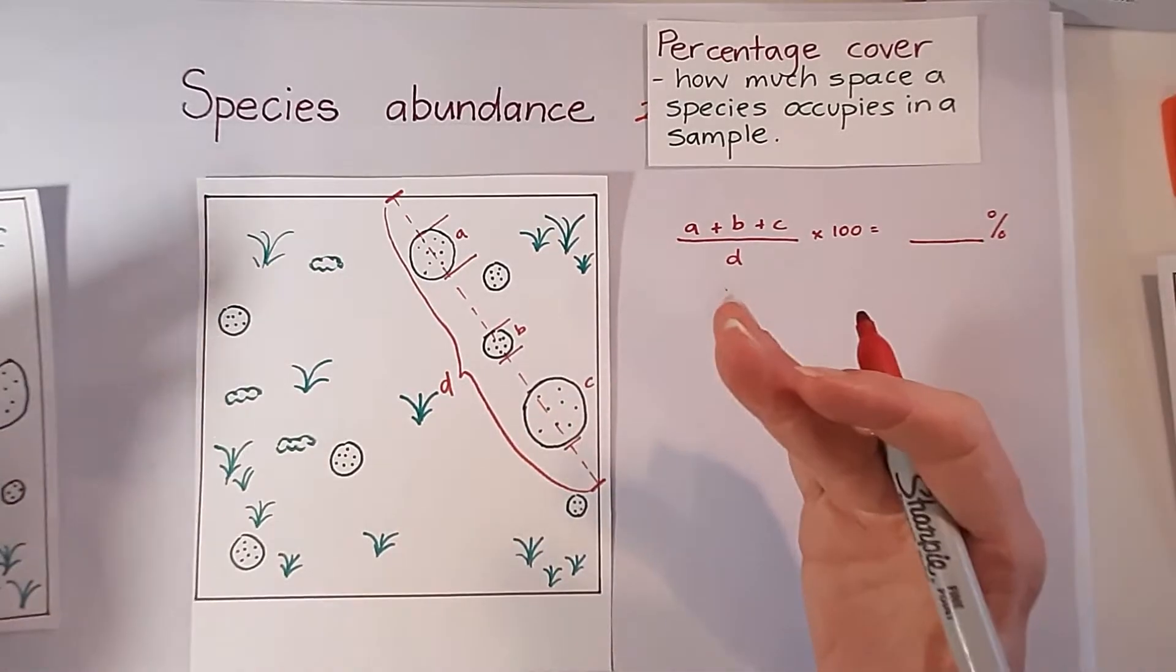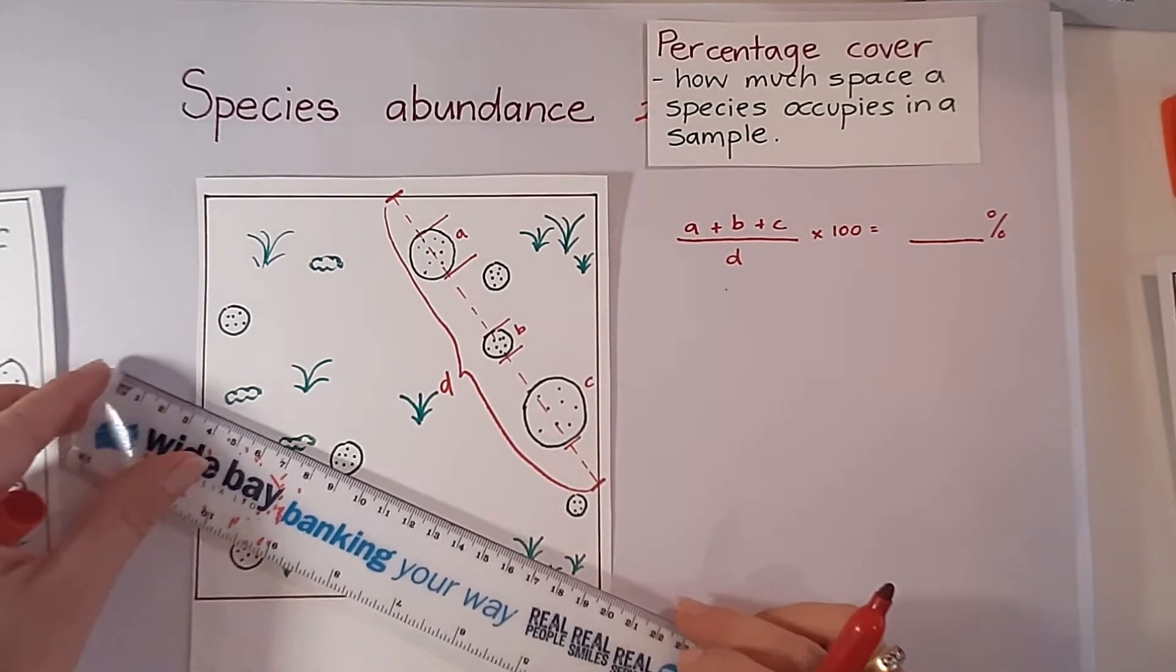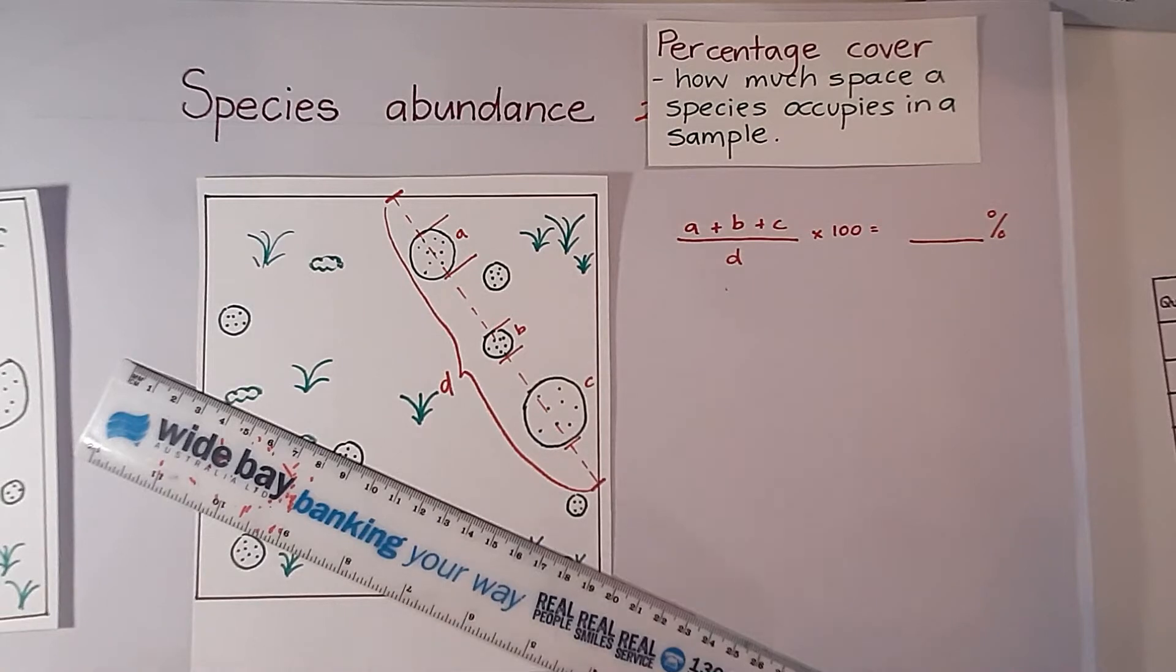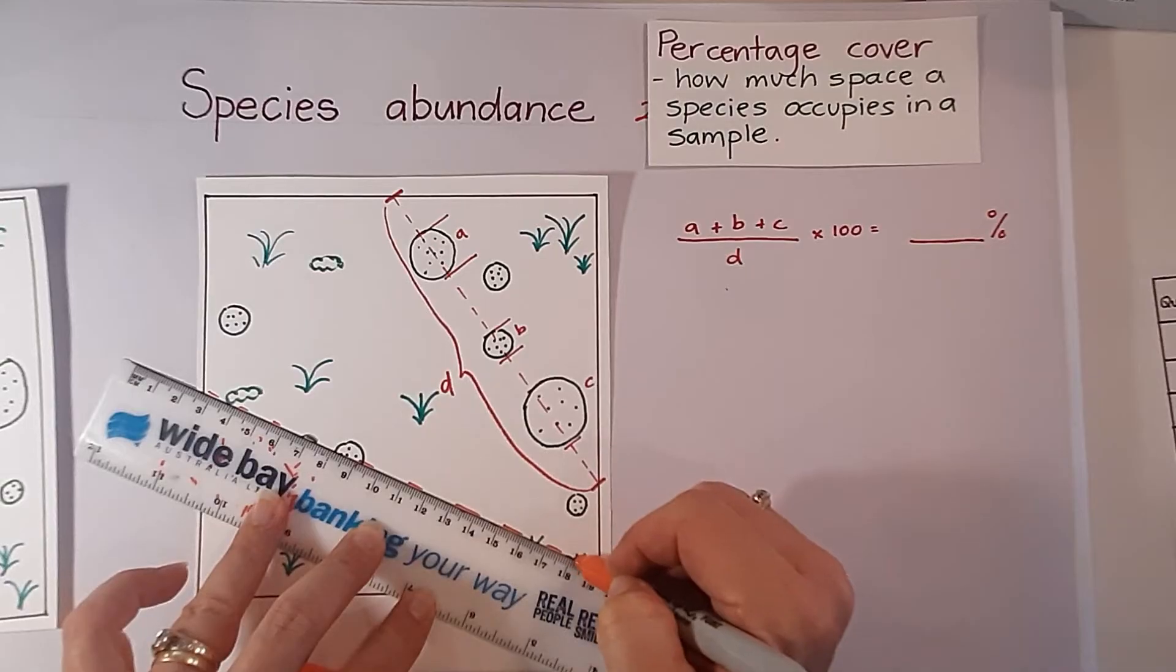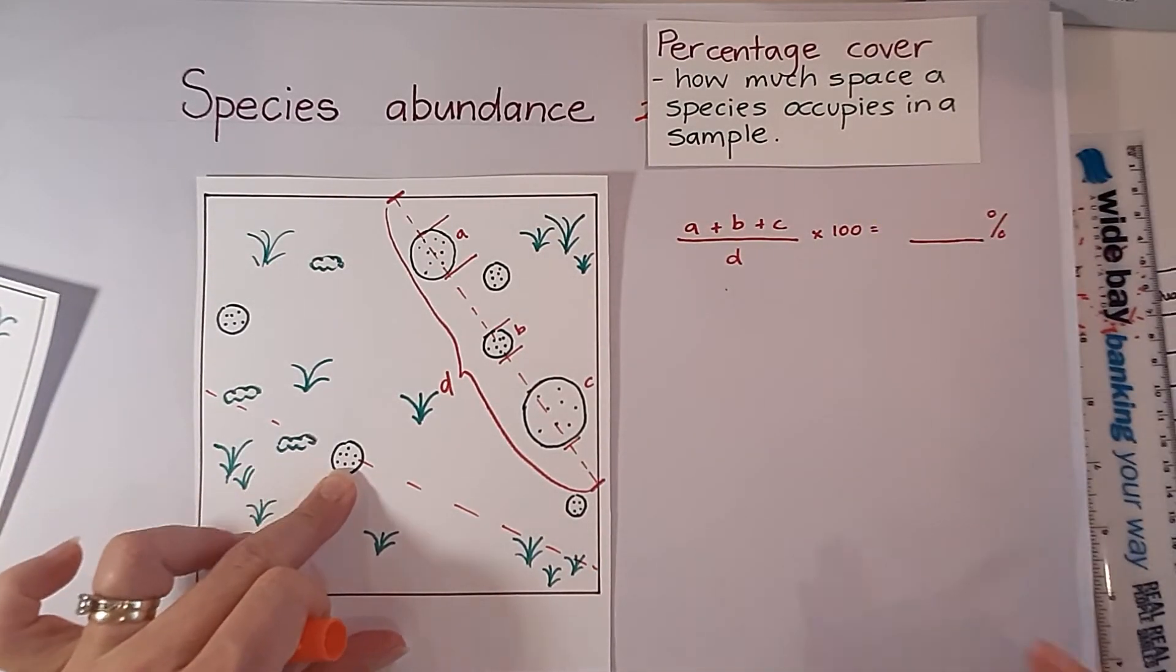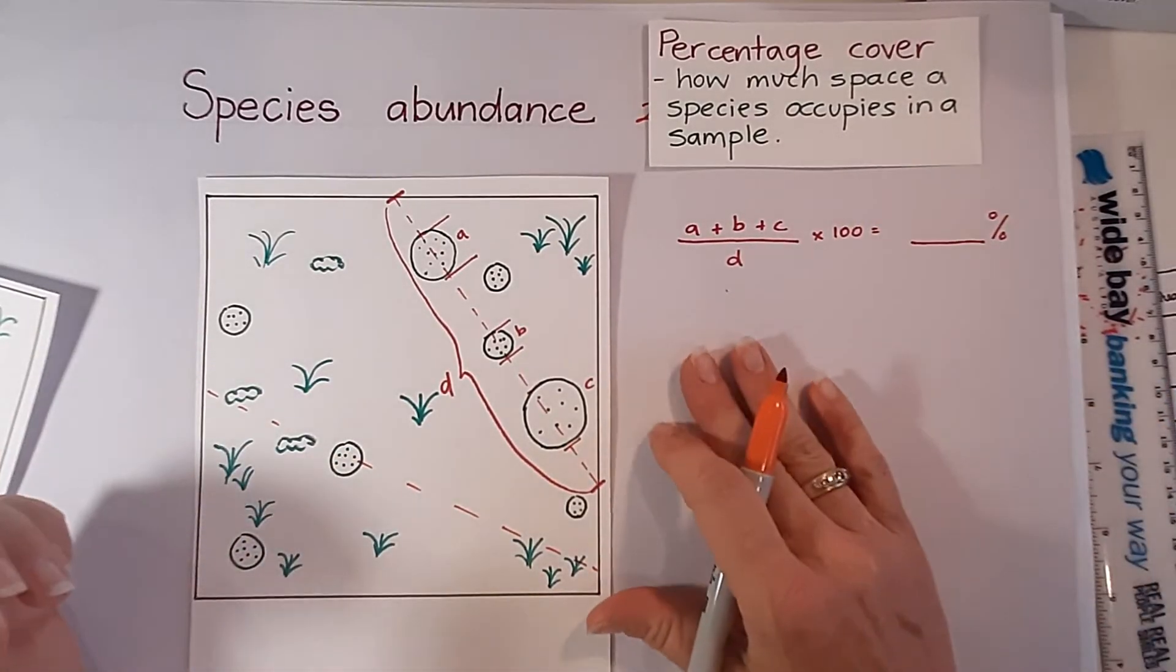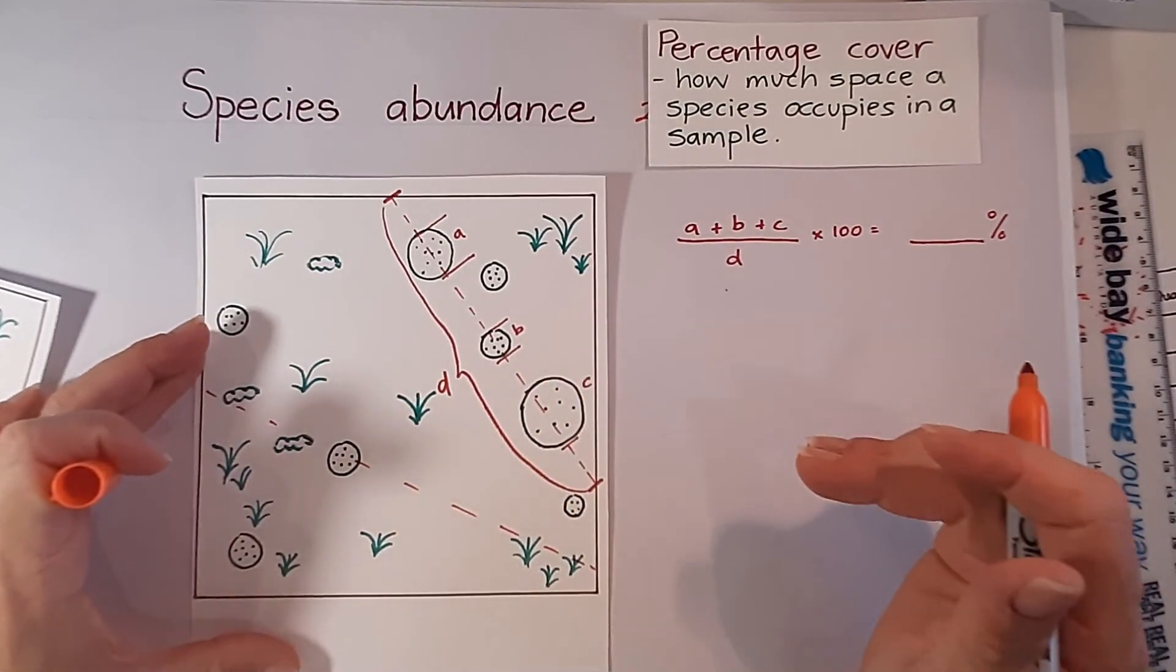In any sampling event it wouldn't just be one line transect. An ecologist would go and do a number of different line transects and work out the percentage cover for each one. This one it would be much lower for that particular dotty species. But if they worked it out for each one then they could work out the average percentage cover for that particular species in that particular environment.